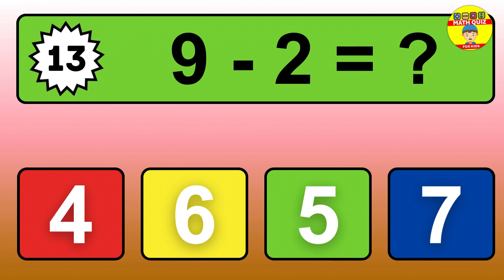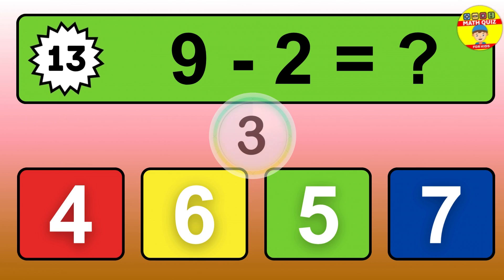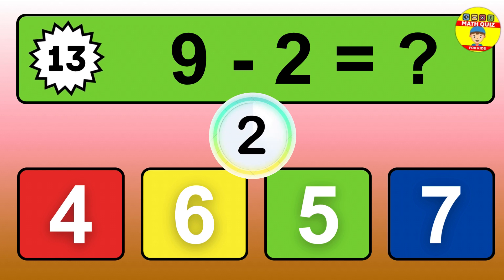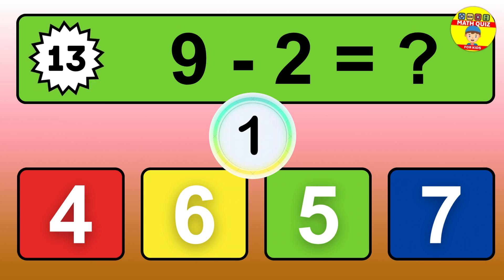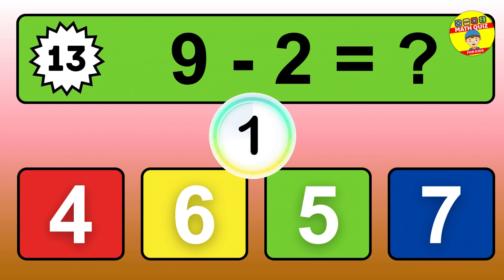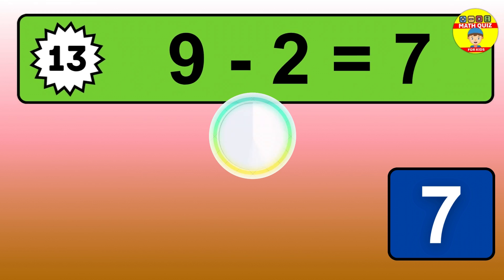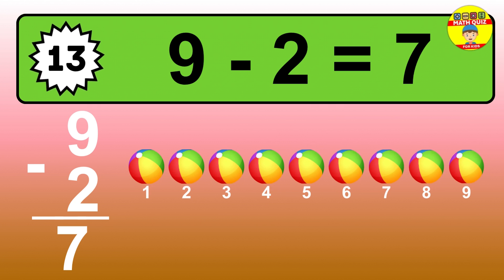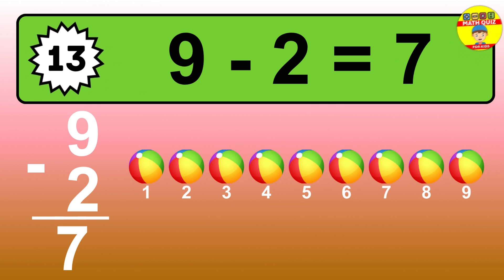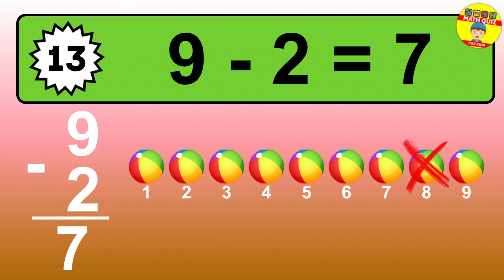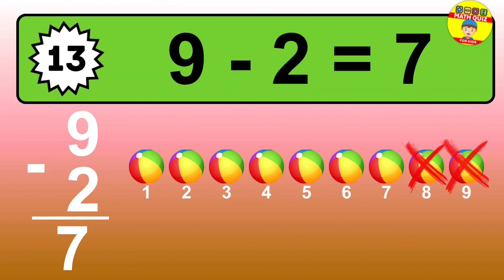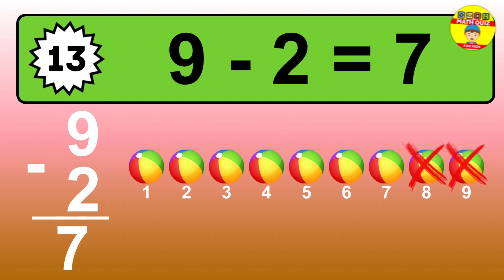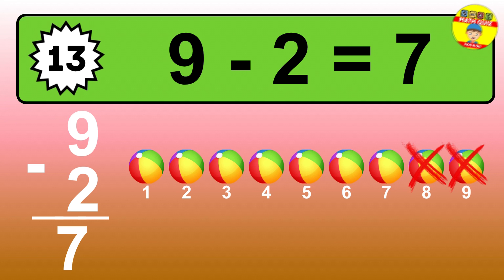Question thirteen: nine minus two equals what? So the answer is, nine minus two is seven. Let's count it. One, two, three, four, five, six, seven.